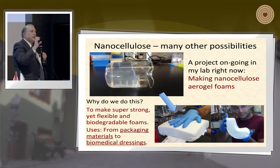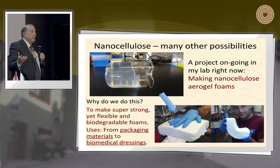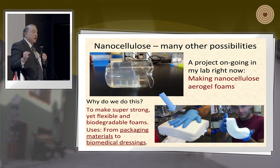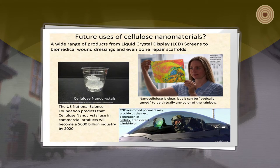Some other things we can do with nanocellulose: one of the samples is a spongy white nanocellulose aerogel, which can be used for packaging material, but in its wet state makes a very good wound dressing. People are starting to use it in the biomedical area because cellulose materials are very compatible with the human body. Nanocellulose is optically clear as a gel, but you can tune it to any color of the rainbow — and being as strong as it is, you could make ballistic shields or windows, with electrical current changing the color of the material.